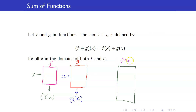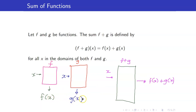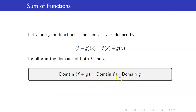We can view this as follows. For this machine f plus g, if the input is x, what this machine does is get the outputs from the two machines f and g and take their sum. For an input x to have an output under f plus g, f of x must be a real number and g of x must be a real number, meaning x is in the domain of f and x belongs to the domain of g. So therefore, its domain is just the intersection of the domain of f and the domain of g.